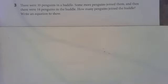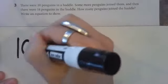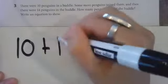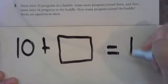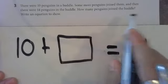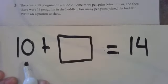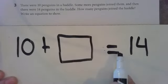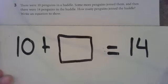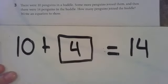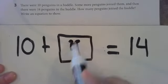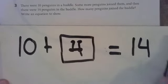The next problem doesn't even have any pictures — tricky! There were ten penguins in a huddle. Some more penguins joined them — how many more? Some — we have no idea, so I'm going to put a box. And then there were fourteen penguins all together. How many penguins joined the huddle? Write an equation to show. So there were ten, some more joined, and all together there were fourteen. So what's ten plus something equals fourteen? Think about it — count on: eleven, twelve, thirteen, fourteen. How many penguins am I holding up? Four. Let's double check: ten, eleven, twelve, thirteen, fourteen. Good job.